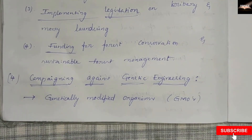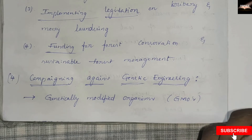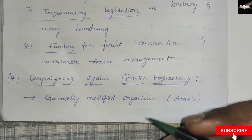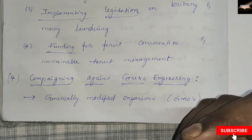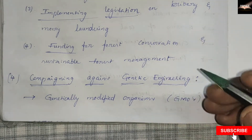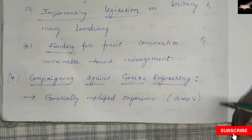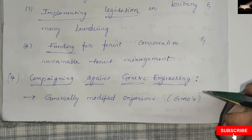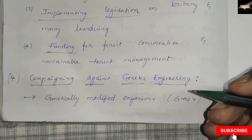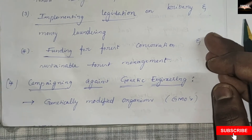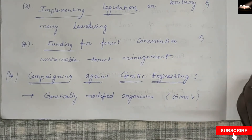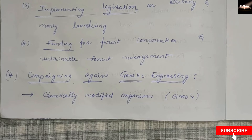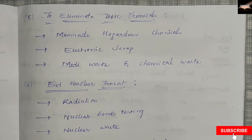Greenpeace campaigns against genetic engineering. While scientific progress in molecular biology has great potential, genetic engineering enables scientists to create plants, animals, and microorganisms by manipulating their genes artificially. These products are called genetically modified organisms. Greenpeace activists are against GMOs because they are artificial and affect the natural ecosystem.